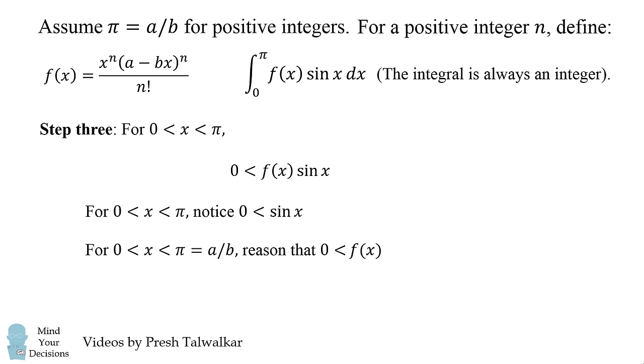For the right hand side, we notice the following things. First, in this interval sin(x) is less than or equal to 1, and second, we'll be able to reason that f(x) is less than pi^n times a^n all over n factorial. It's not too complicated to show that. When you multiply these two inequalities together, you get the right hand side.